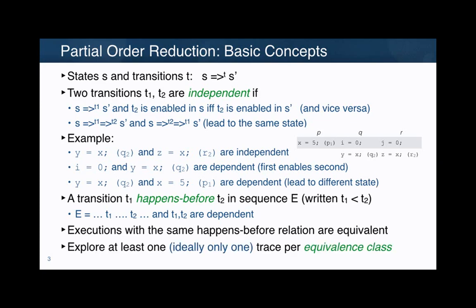The challenge is, of course, generating at least one trace — this is for completeness. For effectiveness, one ideally wants to generate only one trace per equivalence class.